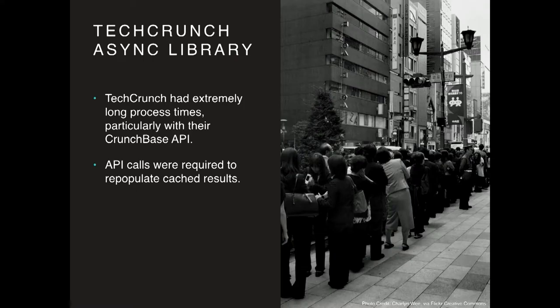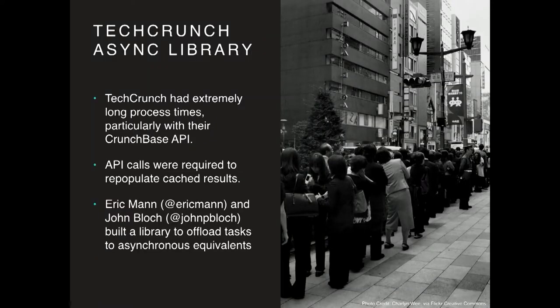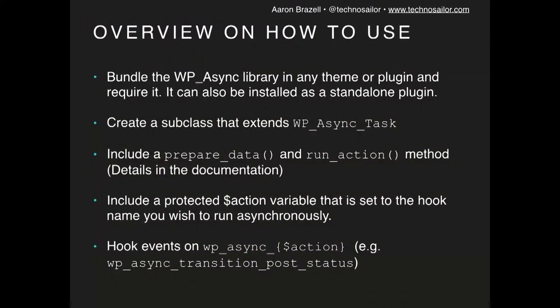A couple of our guys — Eric Mann and John Block — came up with this concept and created a class that TechCrunch has since open-sourced. It's a class that can be required as a file as many times as possible, but it'll never be instantiated more than once. You extend this class, which must have a prepare_data method that is protected, a run_action method that is also protected, and an action variable — a protected variable that contains the hook you want, like save_post. For every hook you want to make asynchronous, you have a class extending the parent with save_post as your action.